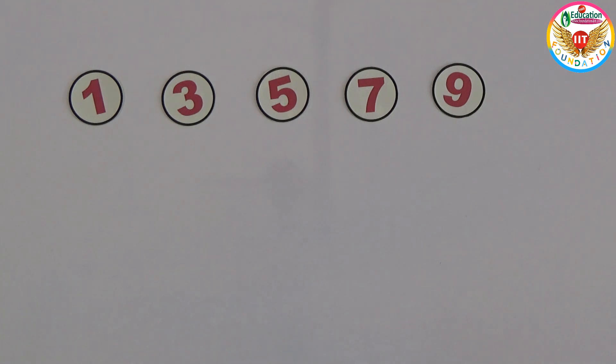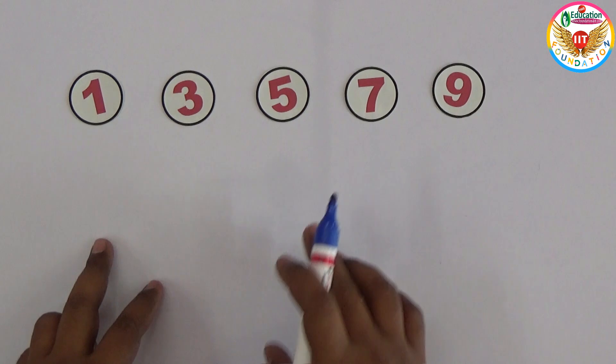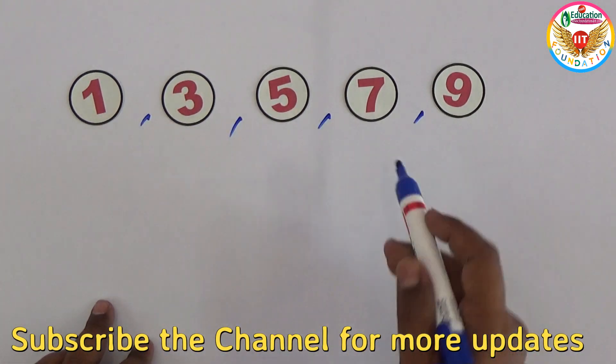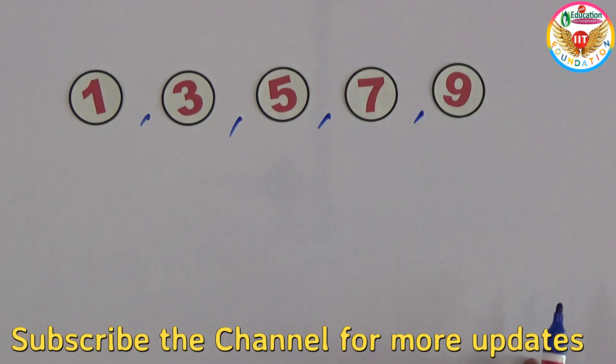Welcome to our educational channel. In this video I will show an interesting trick. You can see here there are five odd digits: 1, 3, 5, 7, 9. Using these five I will show one simple trick.